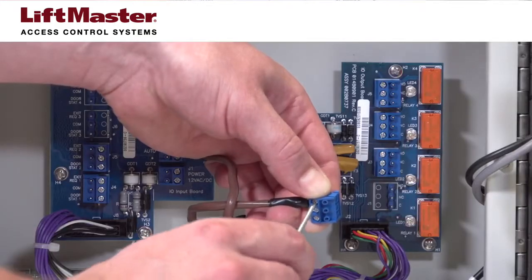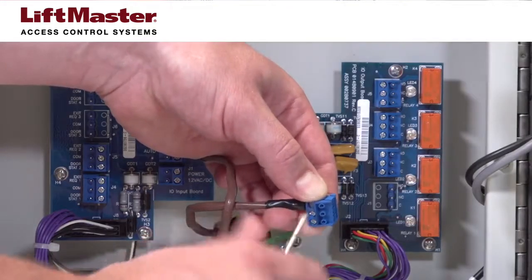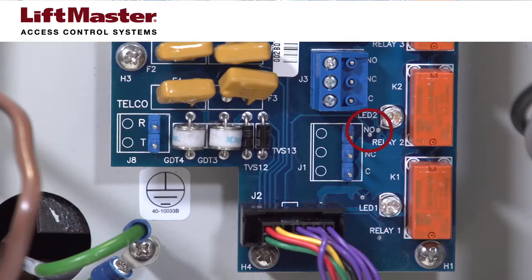Connect 18 gauge wire to Relay 1 on the telephone entry system, with one wire connecting to the normally open terminal and the other wire connecting to the common terminal.